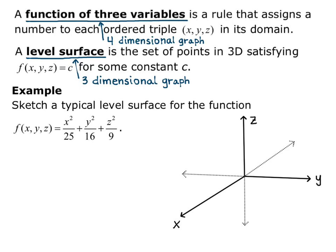A level surface will look like x squared over 25 plus y squared over 16 plus z squared over 9 equals c.